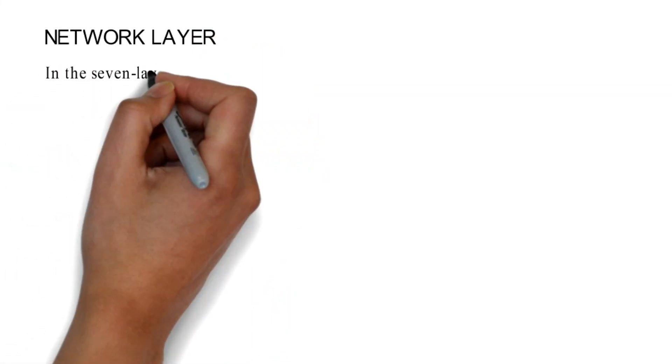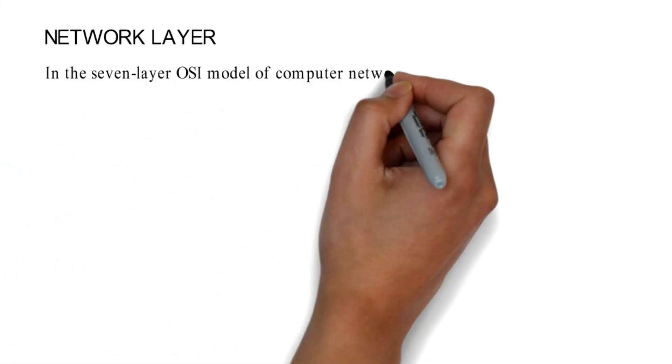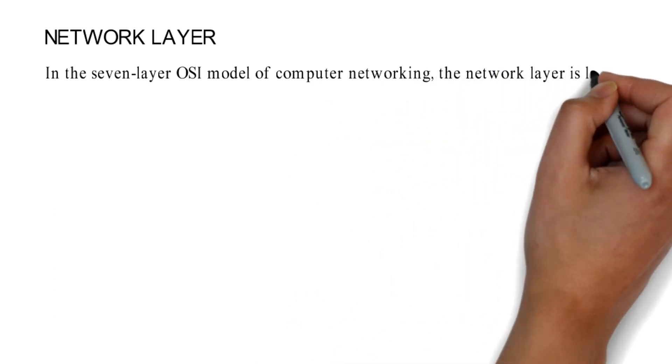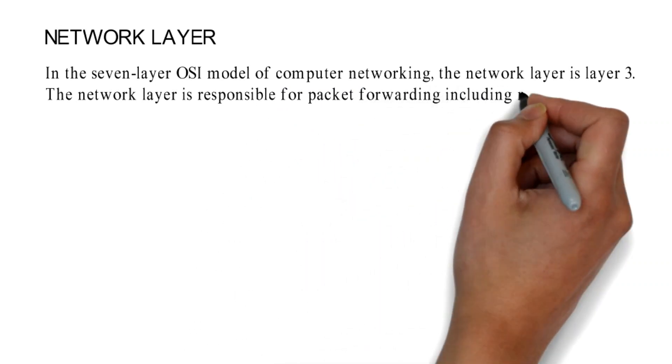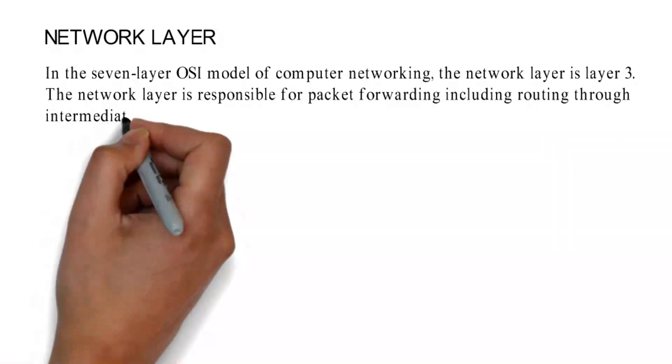Network Layer. In the seven-layer OSI model of computer networking, the network layer is layer 3. The network layer is responsible for packet forwarding.